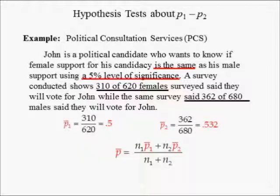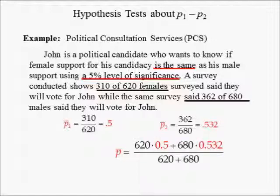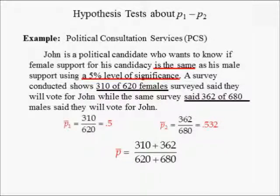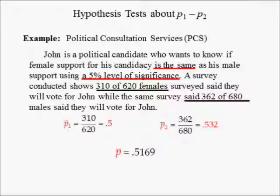Since we have been asked to determine if John's female support is the same as his male support, we are conducting a two-tailed test. Thus, under the null hypothesis, the population proportions are equal, meaning we pool the samples. Substituting the sample sizes of 620 and 680 and sample proportions 0.5 and 0.532 into the pooled sample proportion equation yields a numerator equal to the sum of John's female support, 310 voters, and John's male support, 362 voters, and a denominator equal to the total number of voters surveyed, 620 plus 680. Hence, the pooled sample proportion is 0.5169.